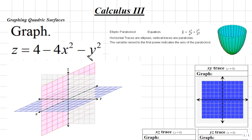To begin, to graph our equation in the xy-trace, we'll let z equal 0. So in our equation, if we let z equal 0, then this would become the equation 0 equals 4 minus 4x squared minus y squared. Solving for this equation, we'll add 4x squared and y squared to both sides.